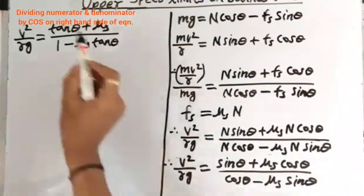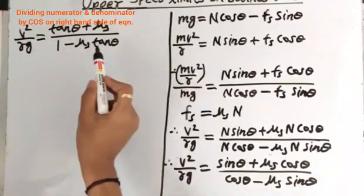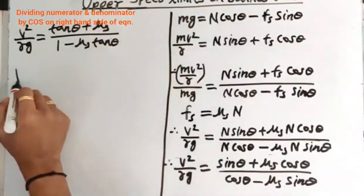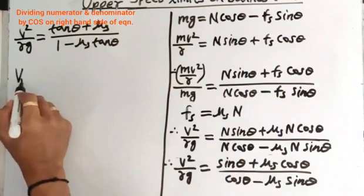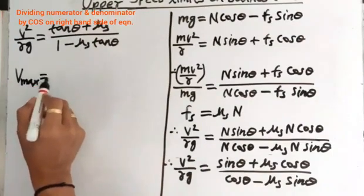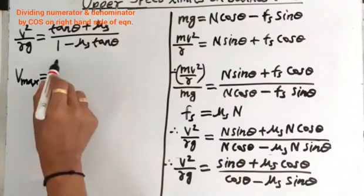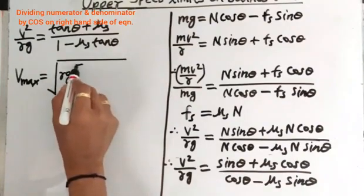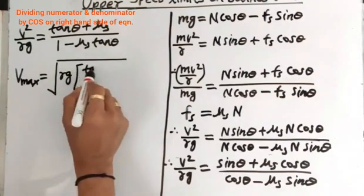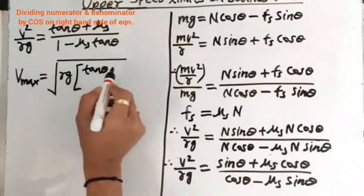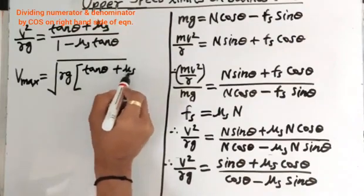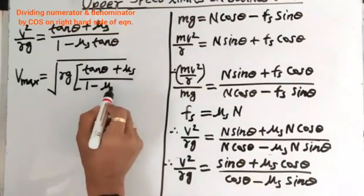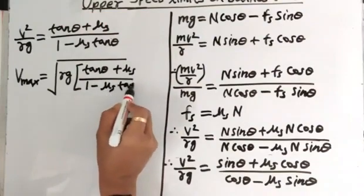Substituting Fs = mu_s N and cancelling N from numerator and denominator, then dividing through by cos theta: v squared upon Rg = (sin theta + mu_s cos theta) / (cos theta minus mu_s sin theta) = (tan theta + mu_s) / (1 minus mu_s tan theta). Therefore, the upper speed limit is: V_max = root Rg [(tan theta + mu_s) / (1 minus mu_s tan theta)].